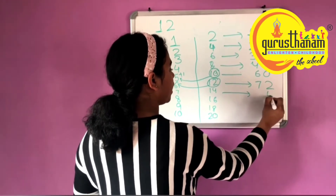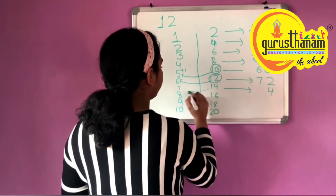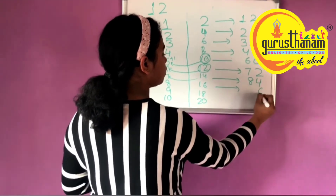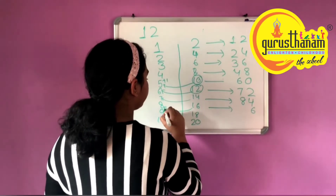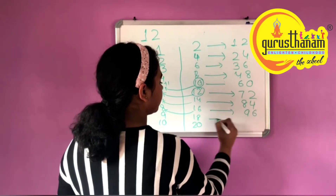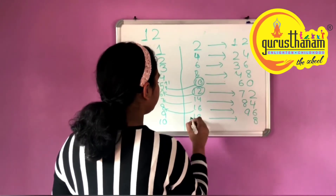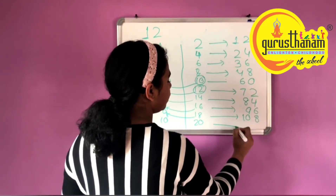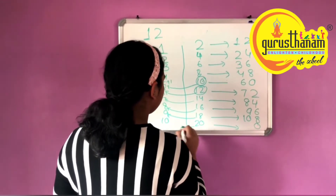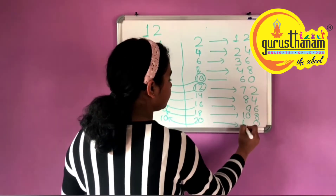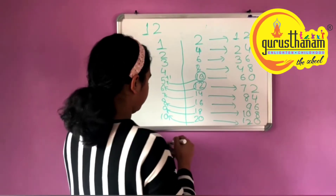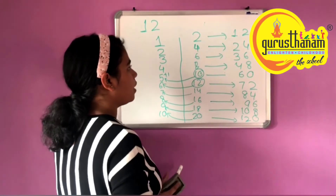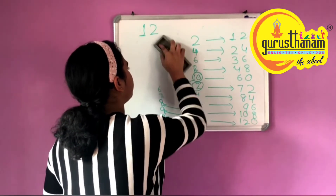4 is written, giving 84. 6 is written, giving 96. 8 is written, giving 108. 0 and 2 giving 120. So the 12 times table is complete. We pick any two-digit number.